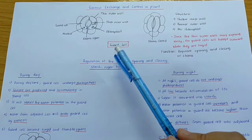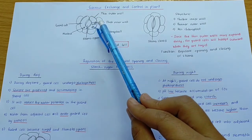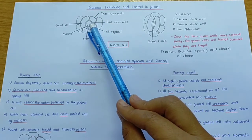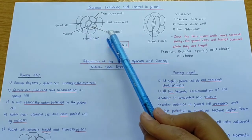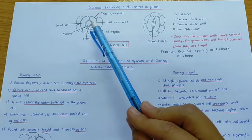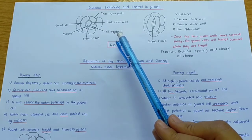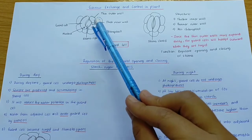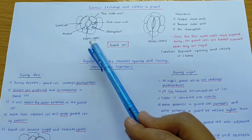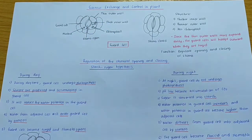If you look at the structure of the guard cell, the guard cell has a thin outer wall and a thick inner wall. Inside the guard cell it has chloroplasts, so that means the guard cell can undergo photosynthesis. It also has a nucleus. With this structure, we consider the stomata to be open.